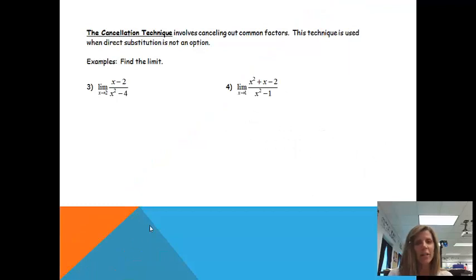The cancellation technique involves canceling out common factors and this is used when direct substitution is not an option. You're rewriting the problem so that you actually can use direct substitution. So before we're done we actually will use direct substitution.